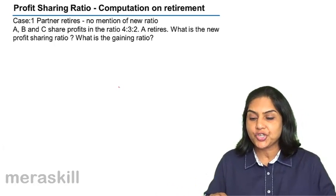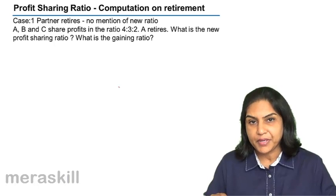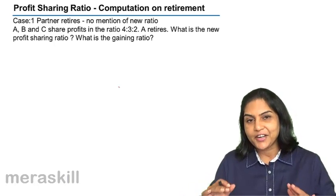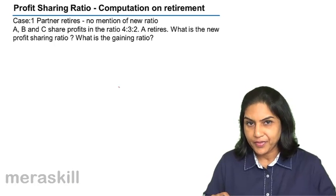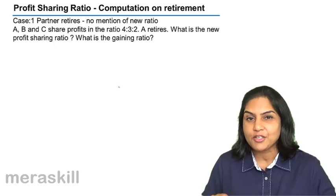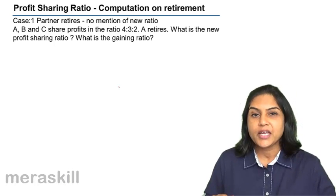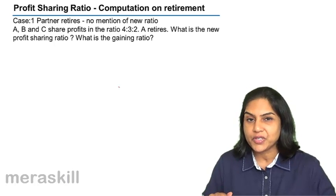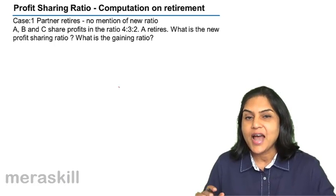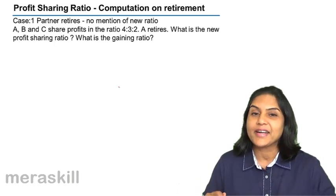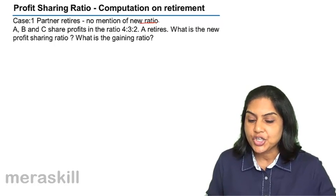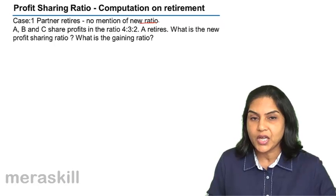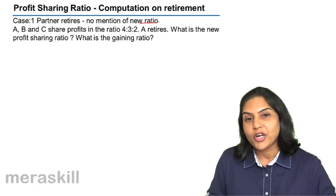Let us now consider profit sharing ratio on a retirement. What happens when a partner leaves? Usually, the remaining partners stand to gain when an old partner leaves the firm. When a partner leaves and nothing is mentioned about the new profit sharing ratio, it is presumed that the remaining partners will share profits in the same ratio as before. Case 1: A, B and C share profits in the ratio 4:3:2. A retires. What is the new profit sharing ratio and what is the gaining ratio?